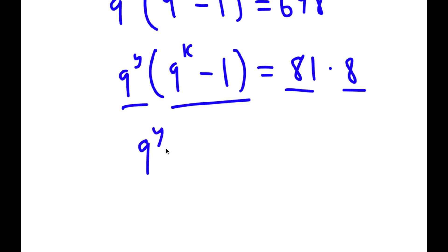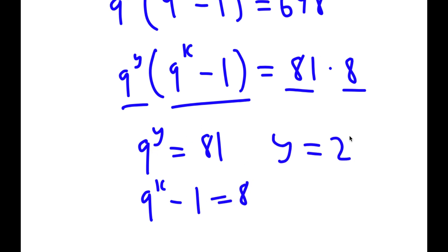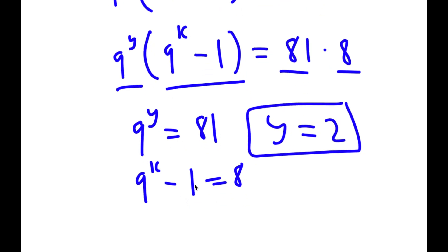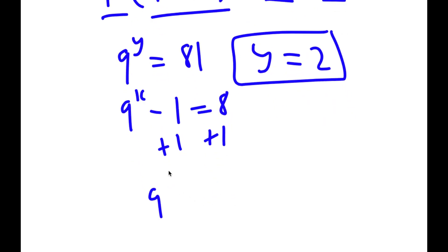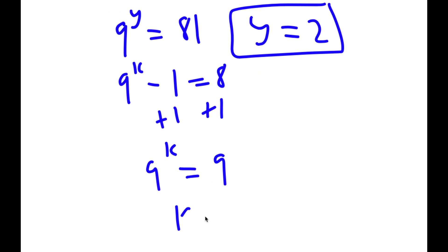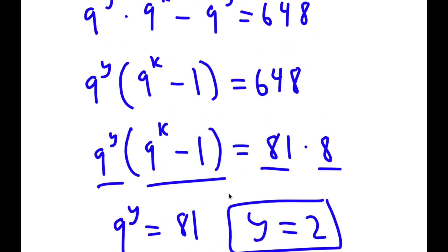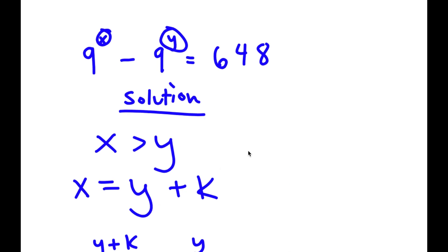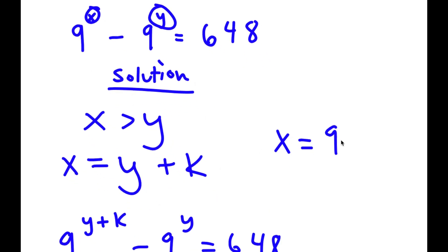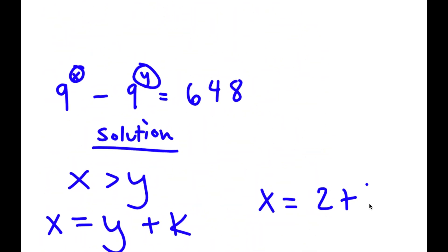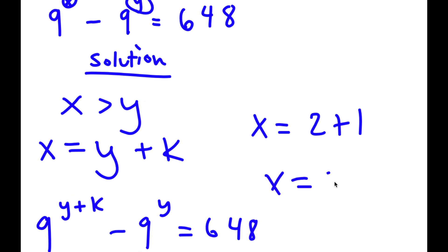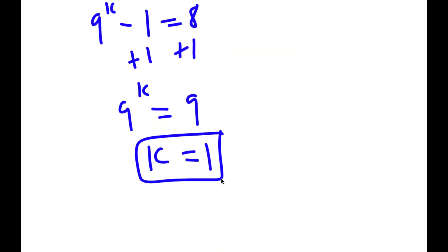So now this gives me two equations: 9 to the power of y equals 81, and 9 to the power of k minus 1 equals 8. For 9 to the power of y equals 81, y is simply 2. And for 9 to the power of k minus 1, I add 1 on both sides so I get 9 to the power of k is equal to 9, meaning k is equal to 1. So now that we have the value of y and k, remember x is equal to y plus k, meaning x is equal to 2 plus 1. So x is equal to 3, y is equal to 2, and k is equal to 1.